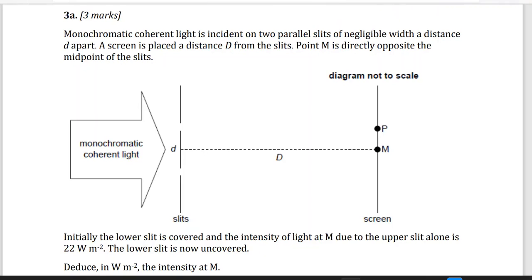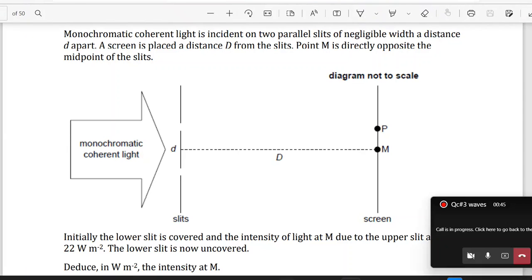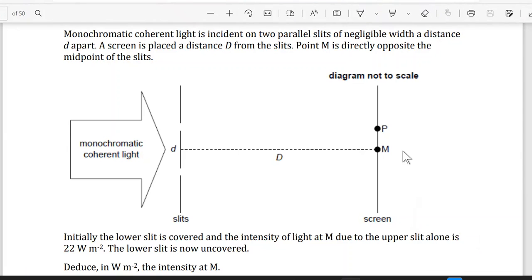We're going to continue with the IP past paper questions. We reach question number three from the document. This question is on double slit interference.